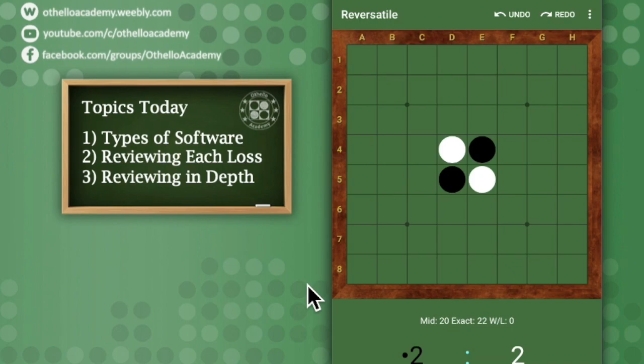And for people who use MacBooks or the Mac OS software, perhaps you might want to explore this software called Cassio, C-A-S-S-I-O. So that is also a reviewing software available.